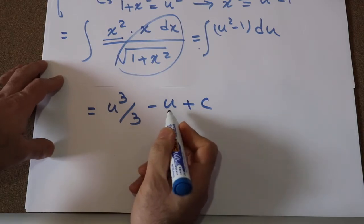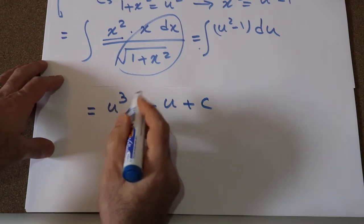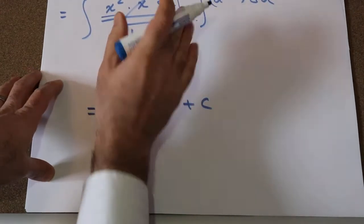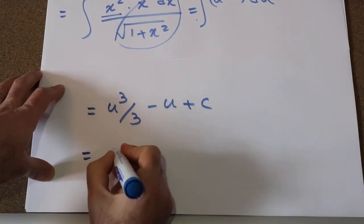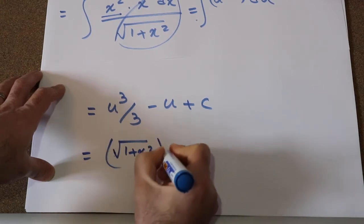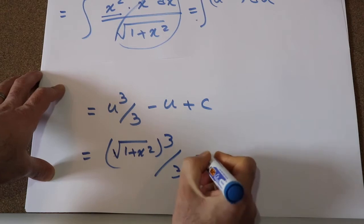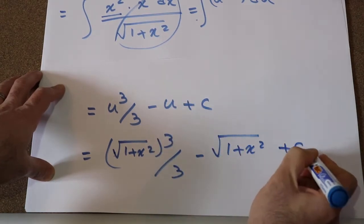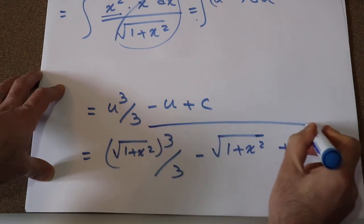So here all you need to do is substitute the parameter u with the definition of u, which was equal to square root of 1 plus x². So this will be equal to square root of 1 plus x² with the power of 3 divided by 3 minus square root of 1 plus x² plus c, which is the constant of the integral.